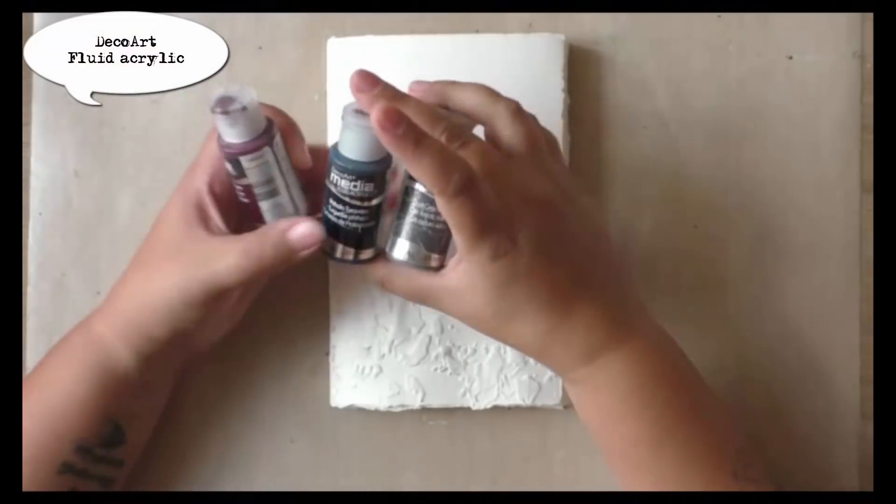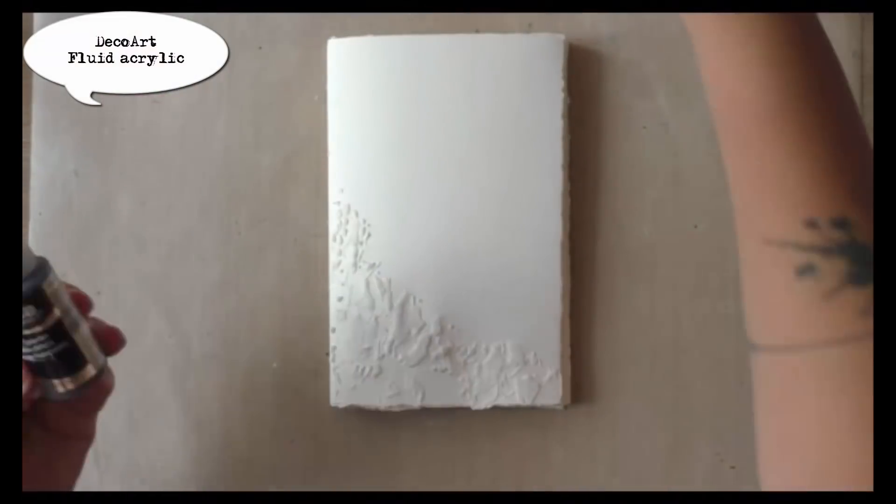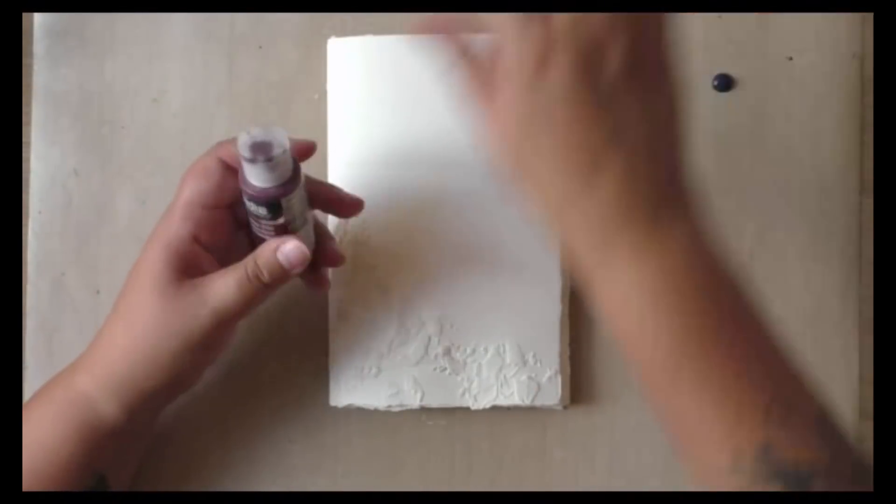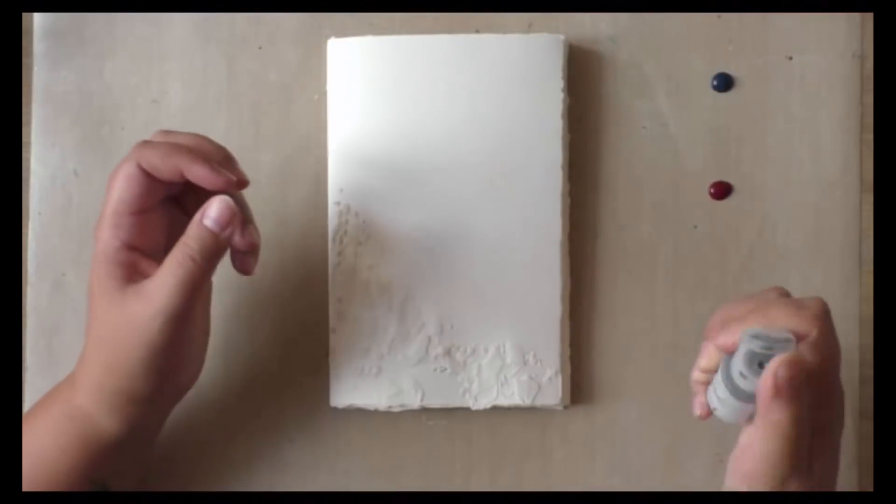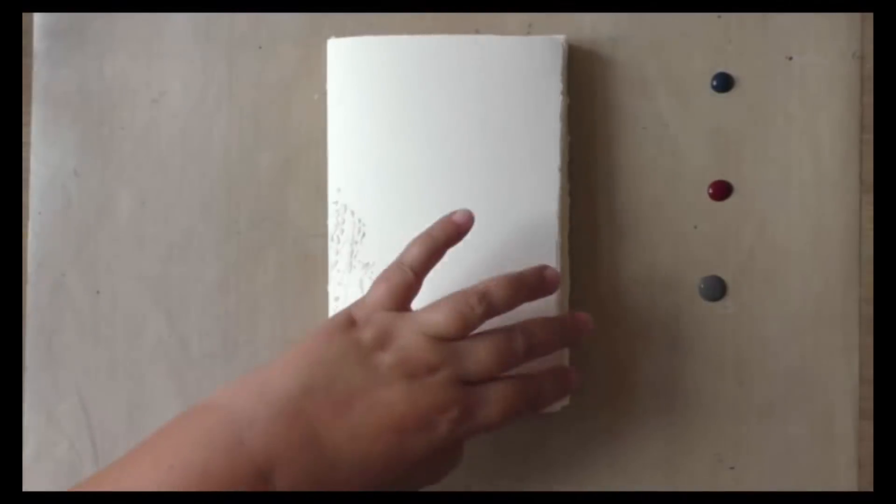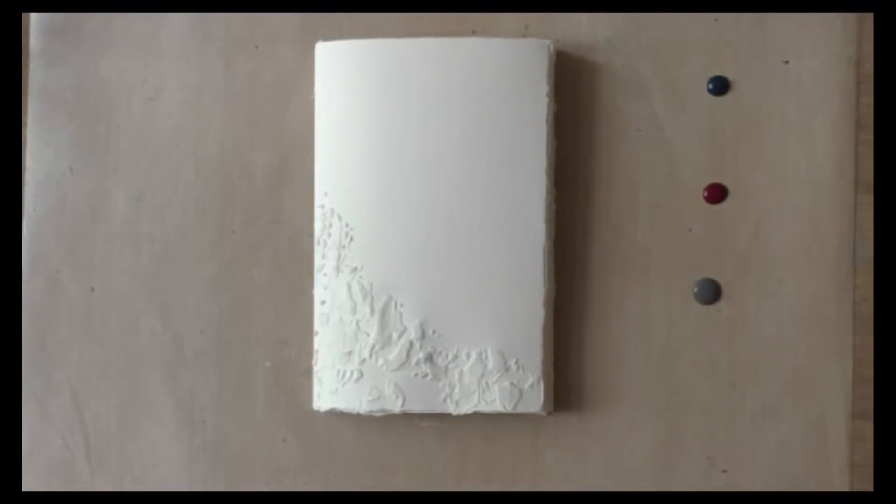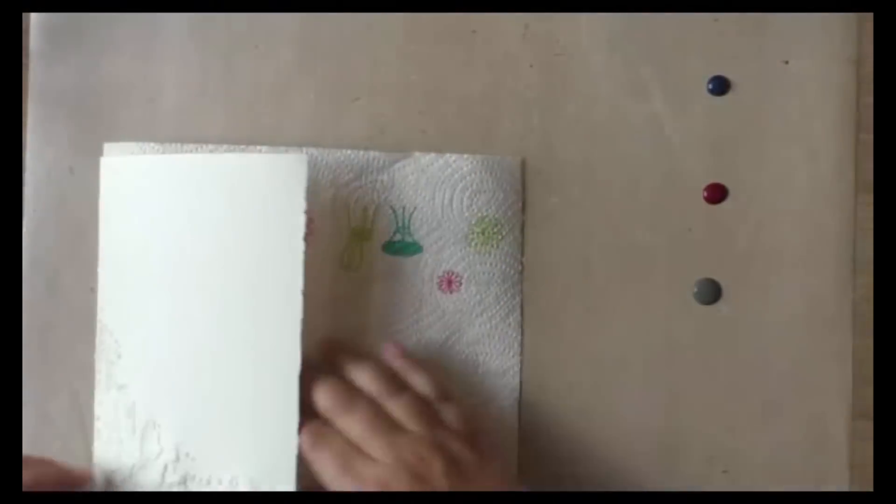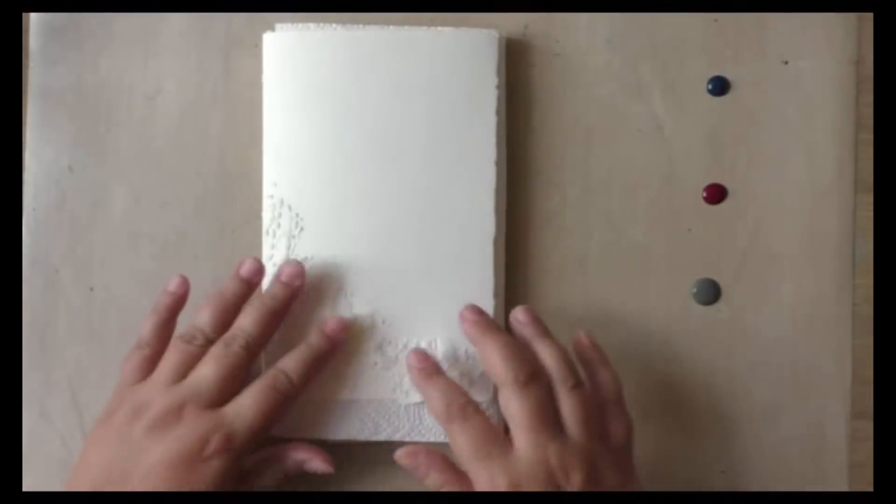I picked out three colors in the fluid acrylic: the quinacridone violet, phthalo turquoise, and the dark grey. I'm going to use these three colors combined with lots of water. So I'm protecting my journal to avoid having the color going everywhere.